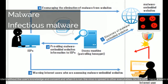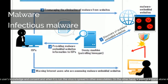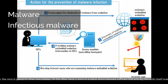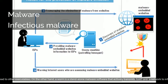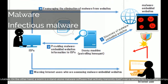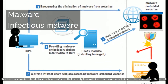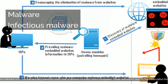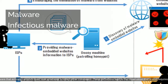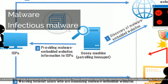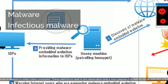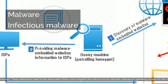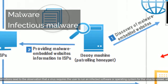A worm, on the other hand, is a standalone malware software that actively transmits itself over a network to infect other computers. These definitions lead to the observation that a virus requires the user to run an infected software or operating system for the virus to spread, whereas a worm spreads itself.